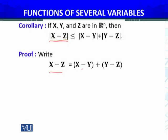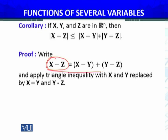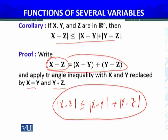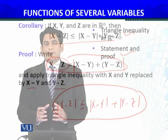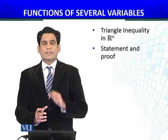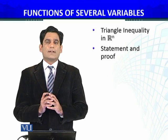To prove this, in the left-hand side we add and subtract Y — adding plus Y and minus Y — so equality holds. Now we apply the Triangle Inequality property we just proved, applying it with X and Y replaced by X minus Y and Y minus Z. So we get |X - Z| ≤ |X - Y| + |Y - Z|. This implements the Triangle Inequality we just proved, and thus the required corollary is proved. Similarly, we have deduced the result that the magnitude of X minus Z is always less than or equal to the magnitude of X minus Y plus the magnitude of Y minus Z.